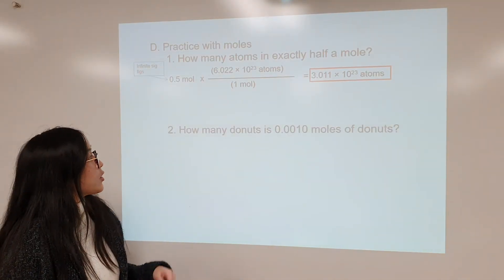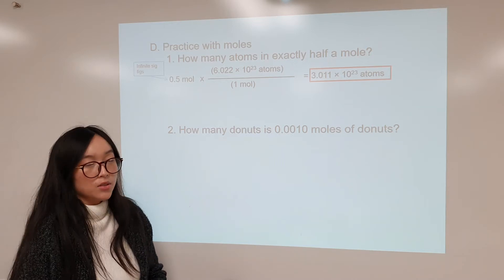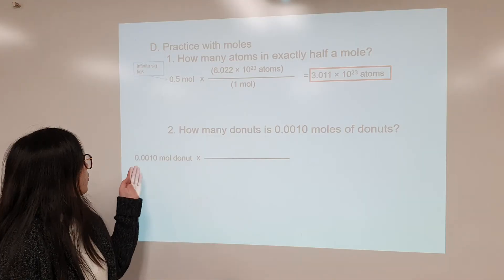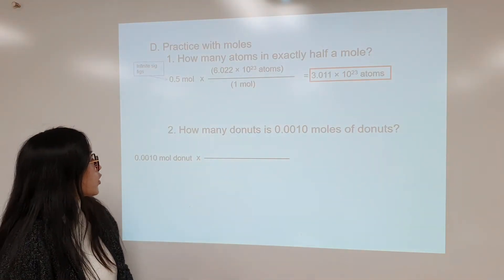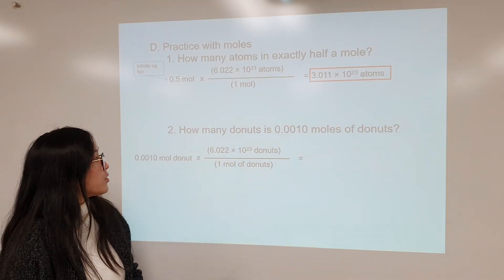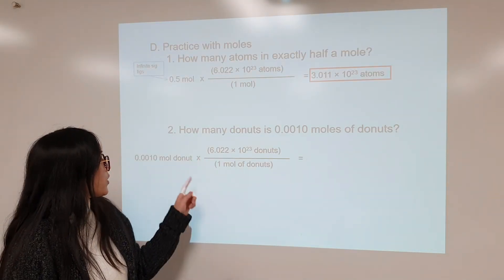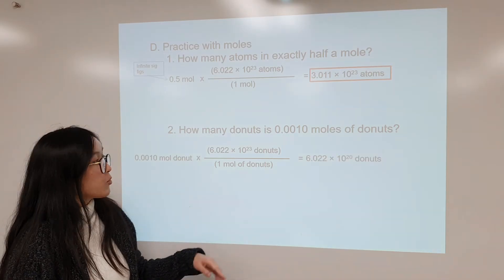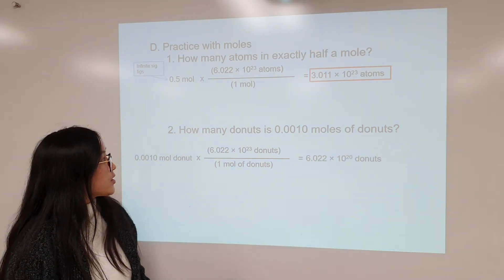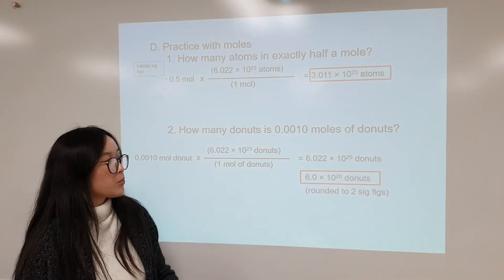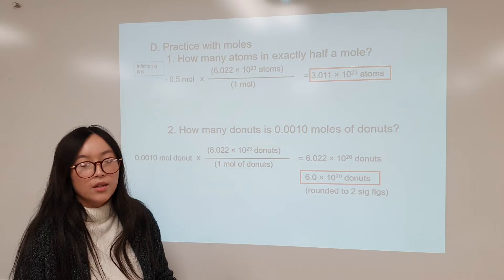And for another example, how many donuts is in 0.0010 moles of donuts? We are writing our given first. We have 0.0010 moles of donuts. And we want to make that conversion factor with Avogadro's number. We want to make sure our units cancel out here. And we'll get this number unrounded. And when we round it to the correct sig figs, we'll get 6.0 times 10 to the 20th donuts.